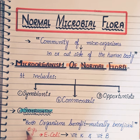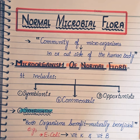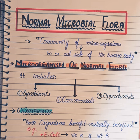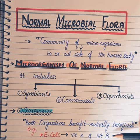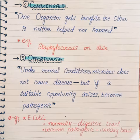First, we have symbionts, which means both organisms get benefits — it is mutually beneficial. For example, in our enteric tract we have E. coli, which produces vitamin K and vitamin B complex. In return, we provide a warm, moist, nutrient-rich environment to E. coli. Vitamin K has a role in blood clotting, and vitamin B has a role in metabolism.